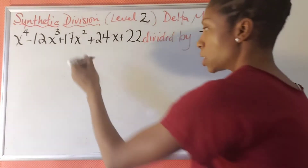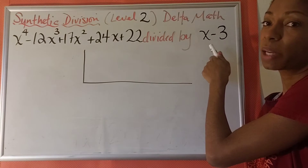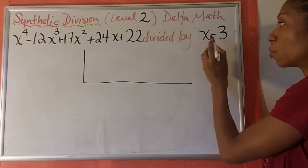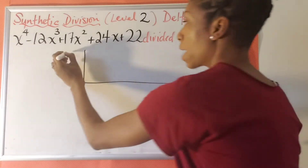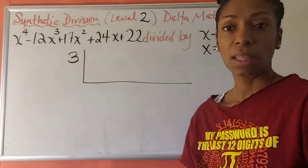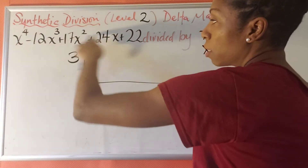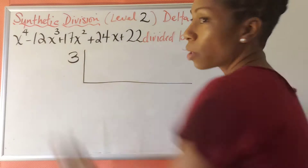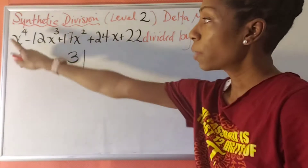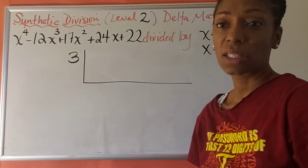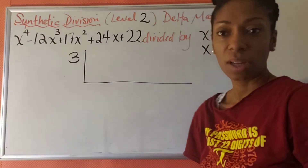The first thing is to just set up this L shape. We put whatever makes this binomial equal to 0 — the x value. So if x were 3, this binomial would equal 0, so that 3 goes outside the L. And then we put the coefficients of the polynomial — the number we're multiplying each term by. Here we have x to the 4th, and the coefficient of x to the 4th is an invisible 1.